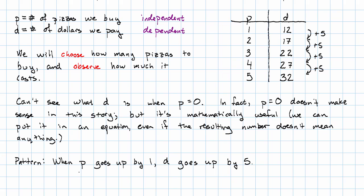But let's run that backward. If p goes down by one, if I buy one less pizza, what happens to the amount I have to pay? Well, it goes down by five.